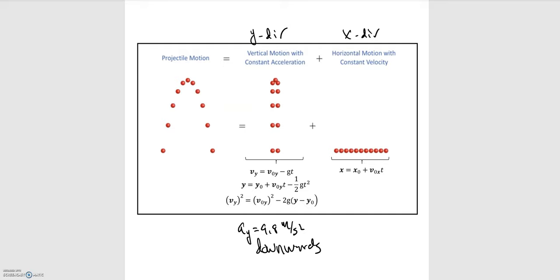Looking at the overall projectile motion, what is the acceleration at a point on the way up? It's in the air and on the way up, so it has a positive velocity. Based on what we just talked about, the only acceleration for a projectile moving in the air is the acceleration due to gravity — 9.8 meters per second squared pointing downwards. Choosing up as positive y and right as positive x, at that point we have a downward acceleration equal to negative 9.8 meters per second squared.